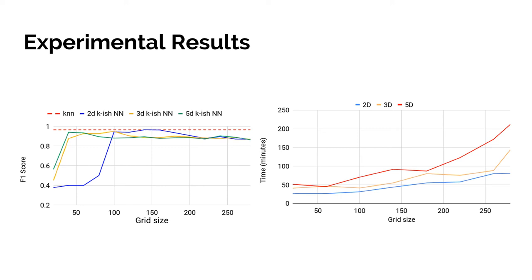We can see that increasing the grid size increases the running time. On the left graph, accuracy measured by F1 score changes with grid size. The dashed line at the top is the accuracy of the exact K nearest neighbors on the 30-dimensional floating point space, which served as a benchmark. Our K-ish nearest neighbors classifier performs a little worse than exact KNN — expected since our algorithm has a probability of guessing a bad threshold T, depending on how Gaussian-like the distance distribution is. For a large grid size, our algorithm's accuracy converges to about 91% versus 97% for the KNN benchmark.